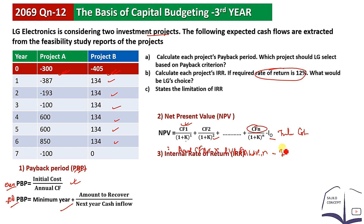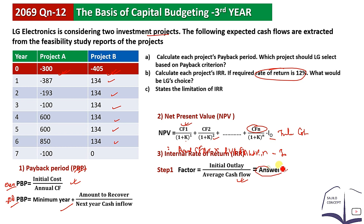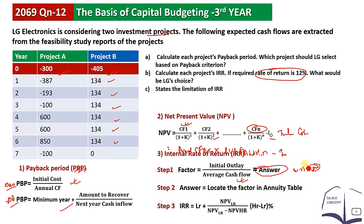We are going to get the IRR formula in 3 steps. Step 1 is to find the factor by dividing the initial cost by the average cash flow. Then we check the PVIF table and get the interpolated value. The interpolation formula is: IRR equals lower rate plus NPV at lower rate divided by (NPV at lower rate minus NPV at higher rate), multiplied by (higher rate minus lower rate).